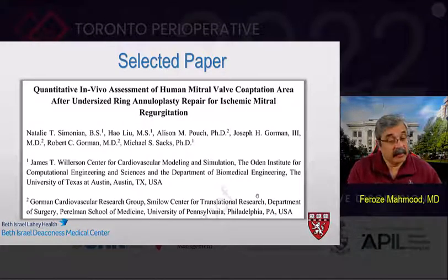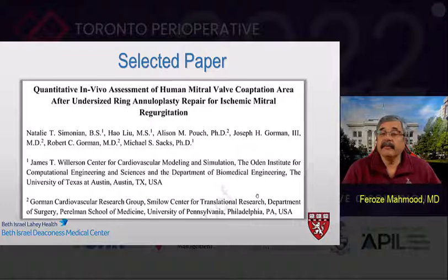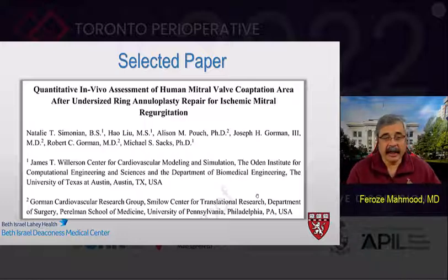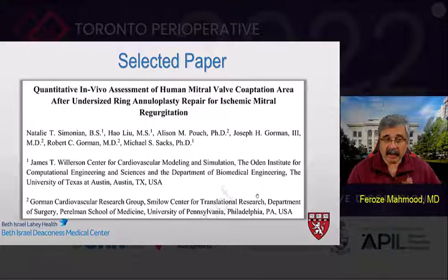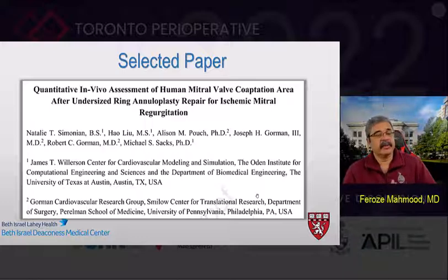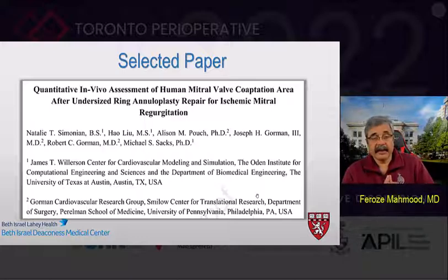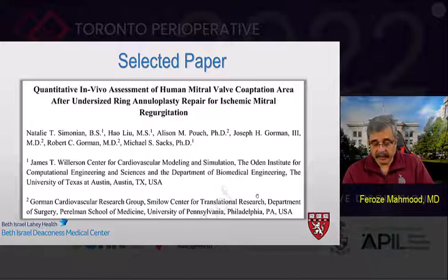The paper I chose, which is still in press and not on PubMed right now, is being published in the Journal of Thoracic and Cardiovascular Surgery, relating to the quantitative in vivo assessment of mitral valve coaptation area after undersized ring annuloplasty repair for ischemic mitral regurgitation. The group — both Robert and Joe Gorman and Dr. Michael Sachs — are colleagues with whom we have collaborated in the past in many NIH-related studies for prediction of ischemic mitral regurgitation recurrence after mitral valve repair. This is a very credible group that does high-end mitral valve reconstruction and geometric analysis, and our data sets were used for the analysis in this specific study.